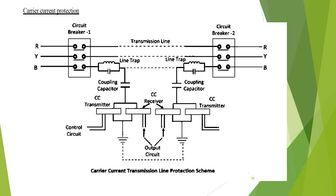The main elements of the carrier channel are a transmitter, a receiver, and coupling equipment followed by a line trap. The carrier current receiver receives the carrier current from the transmitter at the distant end of the line. This receiver converts the received carrier current into a DC voltage that can be used in the relay or other circuits to perform any desired function. The voltage is zero when carrier current is not being received.